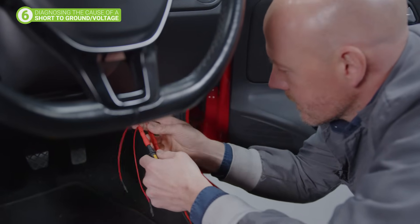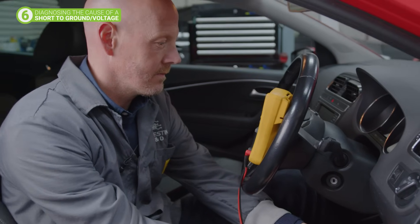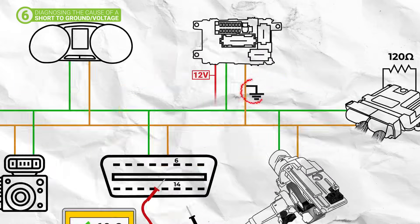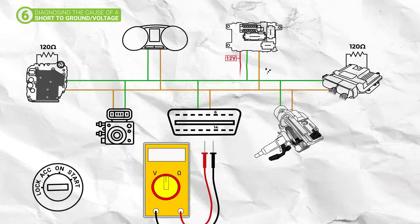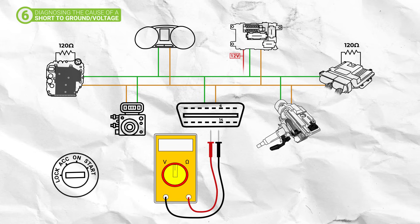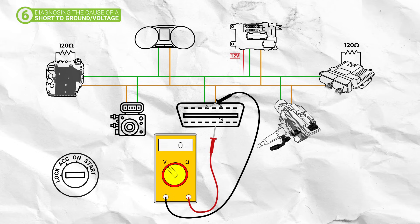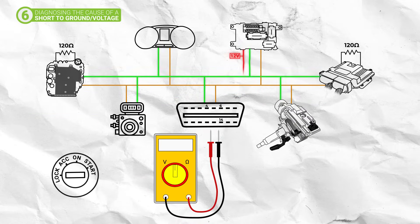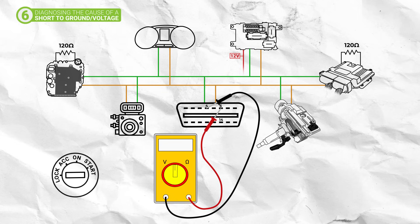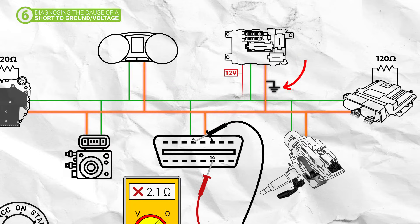A good reading at the OBD2 port doesn't mean there isn't a fault on the CAN bus network. There could also be a short-to-ground or short-to-voltage affecting one or both of the CAN lines. To test for a short-to-voltage, set your multimeter to DC volts and check the voltage between chassis ground (pin 4) and both CAN high and CAN low (pins 6 and 14). If the bus is asleep, there should be no voltage — so if there is, then there is a short-to-voltage somewhere on the bus. To test for a short-to-ground, complete the same test but check for continuity. If there is any continuity displayed, then there is a short-to-ground somewhere on the bus.